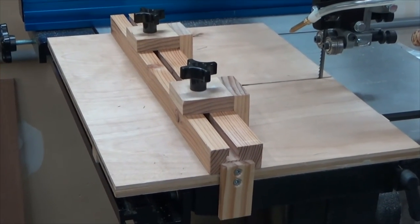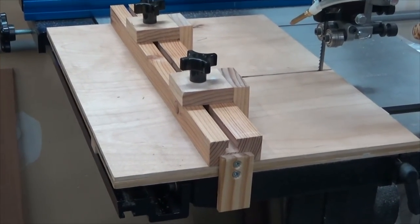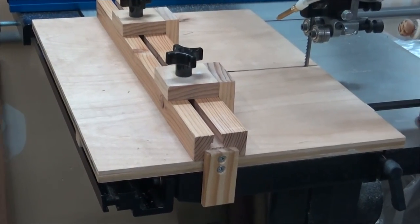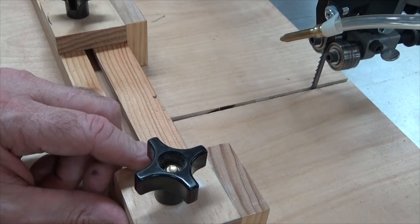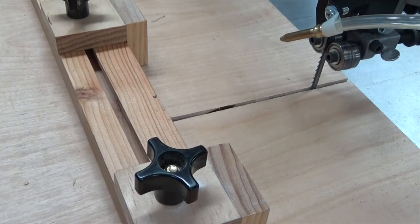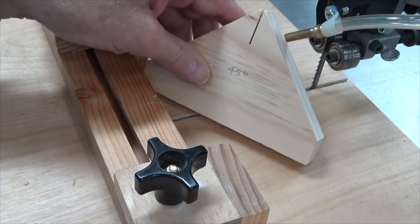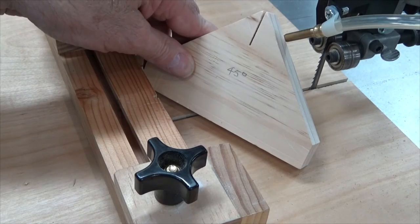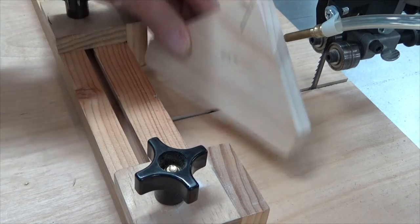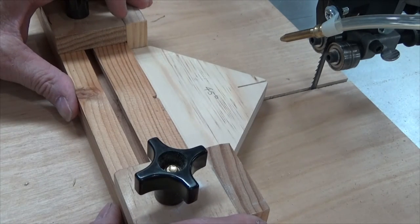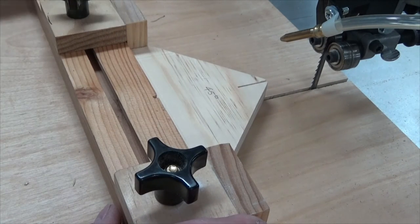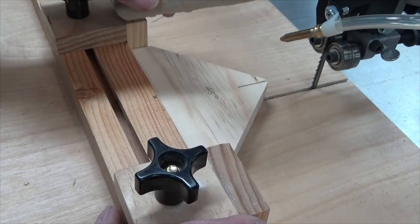The sled's very versatile. Within seconds it can be converted from a cross cut sled into a miter sled. As you can see, I've added a second stop to the bandsaw sled fence. I've made these different templates for different angles. This particular one is 45 degrees. It gets wedged in between the stops and then I can cut my dowel to a perfect 45 degree angle.